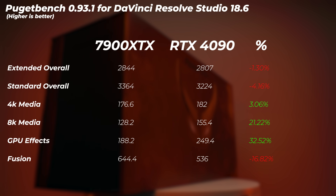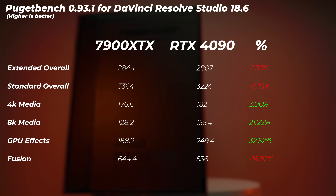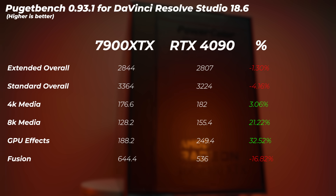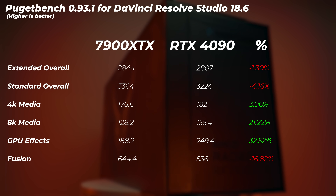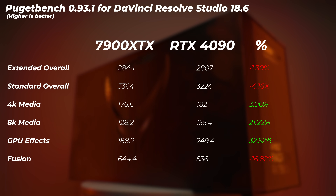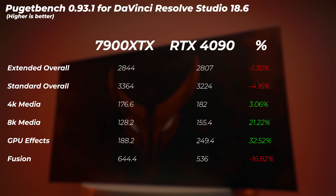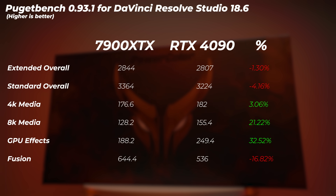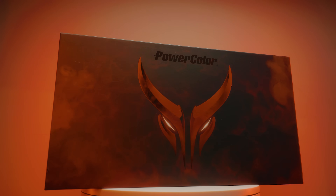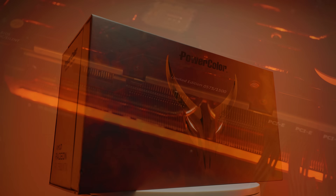In DaVinci Resolve Studio, both of these cards can really stretch their legs since this software utilizes everything a GPU can give. With the latest 18.6 release you can leverage even more GPU features, including neural engine optimizations. Looking at the results, the extended and standard overall scores are both slower on the 4090. The 4K and 8K media scores are actually faster on the 4090, as are GPU effects, but on the Fusion side the AMD card is actually better.